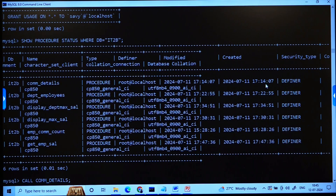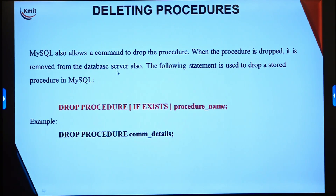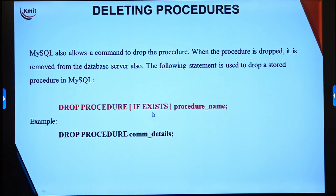The output of SHOW PROCEDURE STATUS lists all procedures defined on IT2B, including who created the procedure, when it was modified, when it was created, and other details. As it is a database object, it can be deleted using DROP PROCEDURE. MySQL allows DROP PROCEDURE, optionally with IF EXISTS, which ensures that the drop is only attempted if the procedure actually exists — so we use DROP PROCEDURE IF EXISTS procedure_name.